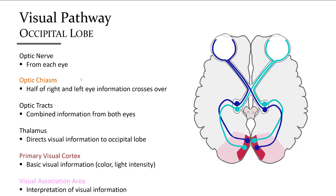The pathway for vision begins at the optic nerve receiving information from the retina. On the underside of the brain is a prominent X-shaped structure called the optic chiasm, where half of the visual field from each eye splits to go to the opposite side of the brain, allowing both hemispheres to receive information from each eye. Once combined, the visual information enters via the optic tracts to synapse at the thalamus, which then directs it to the primary visual cortex in the occipital lobe, where it is interpreted by the visual association area.